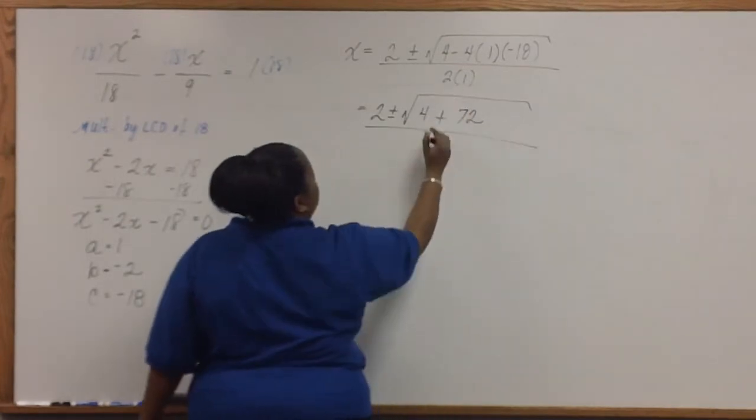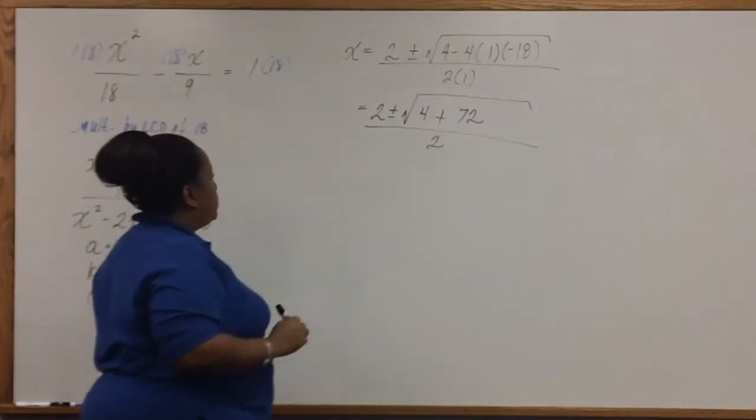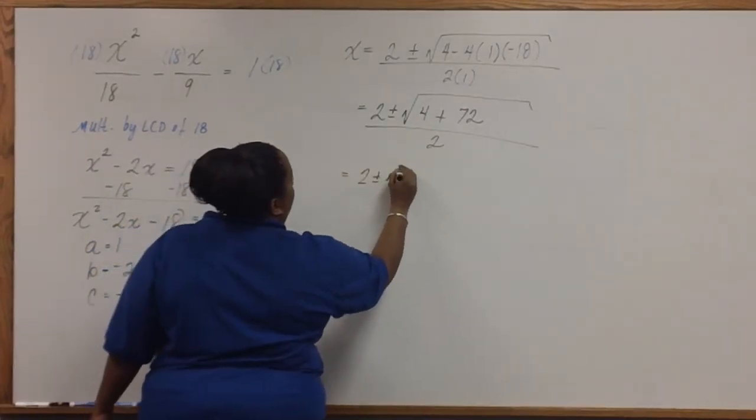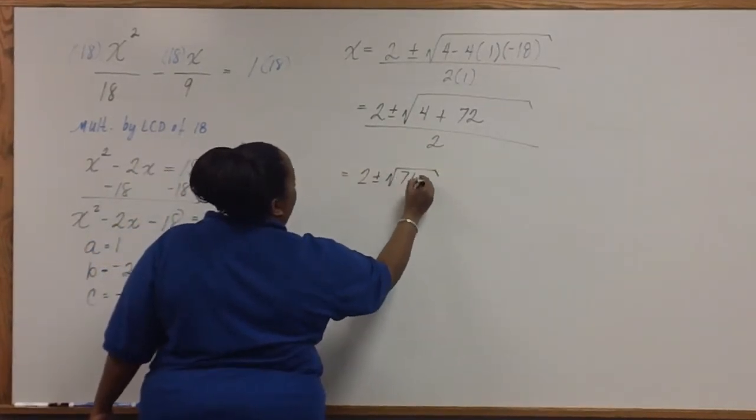All over 2 times 1, which is 2. Now under the radical, we have 76.